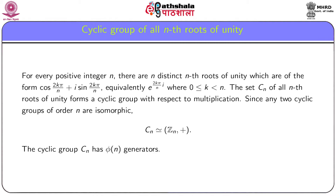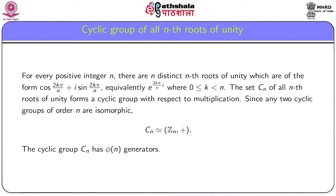Let us denote the set of all nth roots of unity by C_n. Then it is easy to check that C_n forms a cyclic group with respect to multiplication. Since any two cyclic groups of the same order are isomorphic, the group C_n is isomorphic to the group Z_n with respect to addition. Every cyclic group of order n has φ(n) generators, and since C_n contains n elements, C_n also has φ(n) generators.